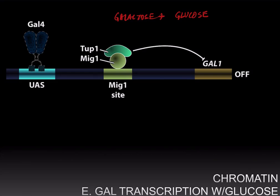That makes sense from an efficiency standpoint: if E. coli has both lactose and glucose available, it would be more efficient to consume glucose and not waste resources catabolizing lactose. A similar situation occurs in yeast — if yeast has both galactose and glucose available, it would be more efficient to catabolize glucose, and therefore the GAL genes should be turned off.